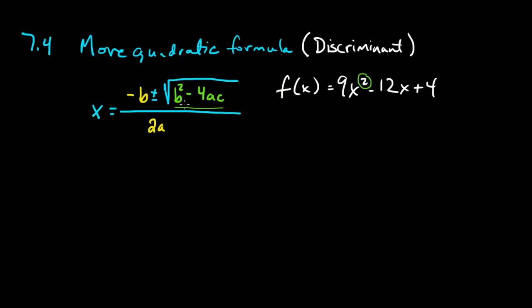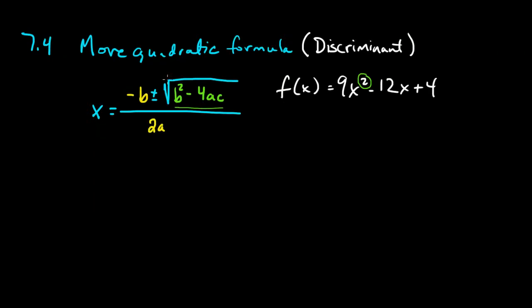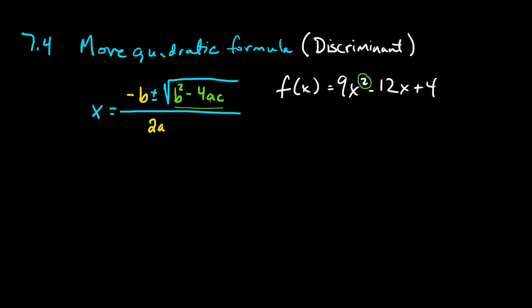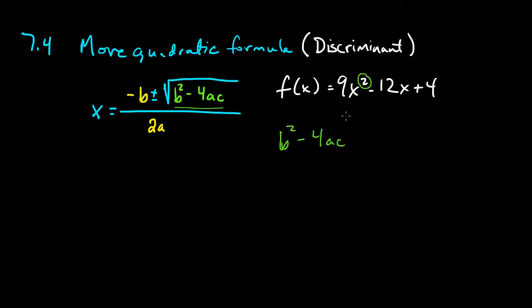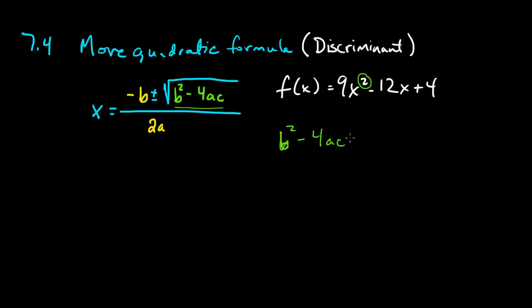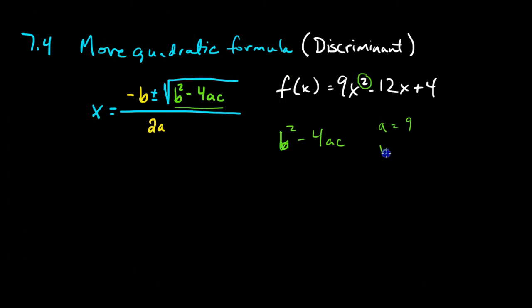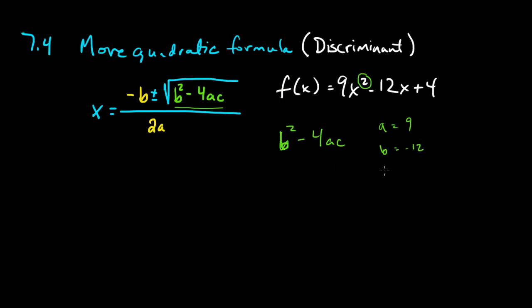To do that, we'll take a look at just the part that's under the radical. We'll look at just the radicand of the quadratic formula, where it says b squared minus 4ac. That is our discriminant. Let's see what the roots of this equation look like. So a is 9, b is negative 12, and c is 4.